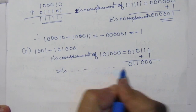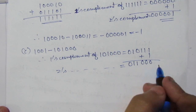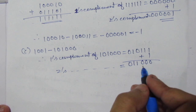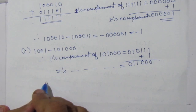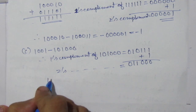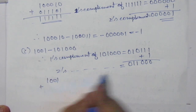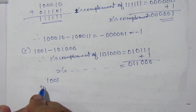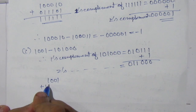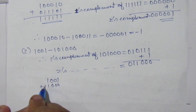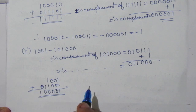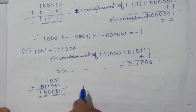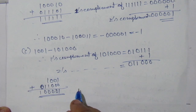You have to add this 2's complement to the minuend. So we add 1001 plus 1100000, giving 1000001 — wait, we add 0001001 plus 1100000, getting 1100001. Here also there is no carry. Whenever there is no carry, or the answer is negative, you have to again find the 2's complement of this number.